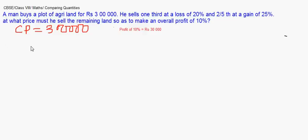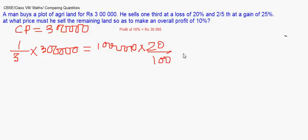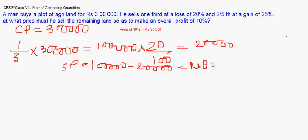In the first one, he sells one third at a loss of 20%. What is one third? One third of 3 lakhs, that is 1 lakh cost price. This 1 lakh he sold at a loss of 20%, so 20% of this becomes 20,000. So the selling price must have been 1 lakh minus 20,000. The selling price was 80,000.